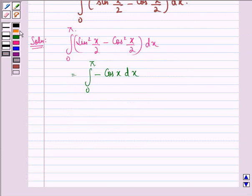This happens because we see that sin²a - cos²a is equal to -cos 2a. So, this is how we get this.